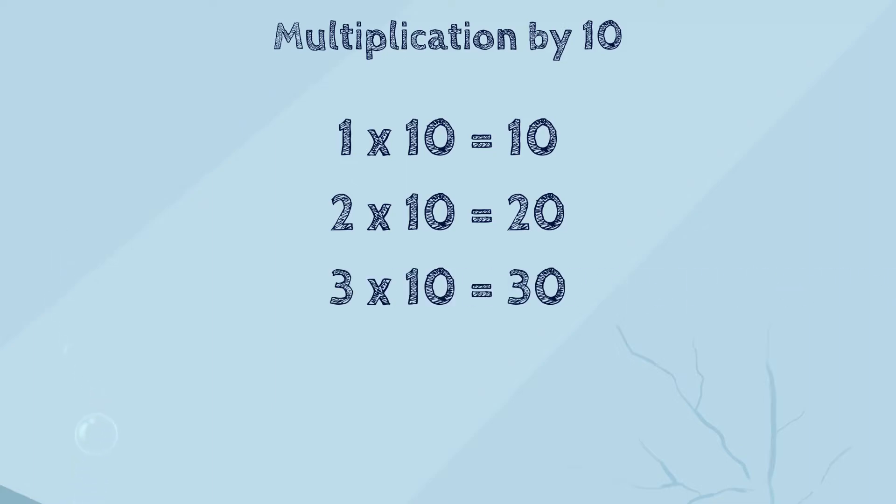Let's start with multiplication by 10 and look at some examples. We know that 1 times 10 is 10. 2 times 10 is 20. 3 times 10 is 30. 4 times 10 is 40. And 5 times 10 is 50.